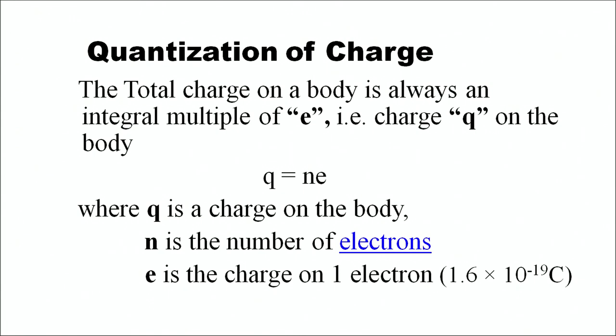Now we will discuss the quantization of charge. The total charge on a body is always an integral multiple of small e, where e is the charge on an electron. The charge on a body can never be 2.5e or 1.5e — it must be an integral multiple of e. Mathematically, q = ne, where n can take values 0, ±1, ±2, ±3, and so on. The value of e is 1.6 × 10⁻¹⁹ coulomb.